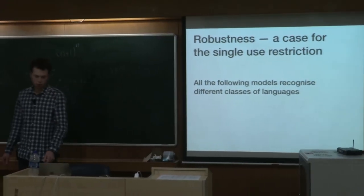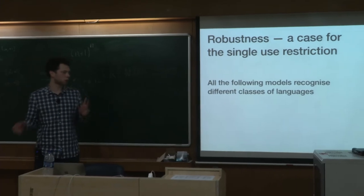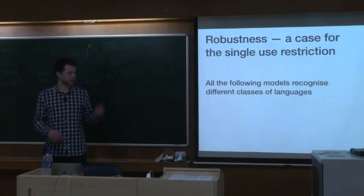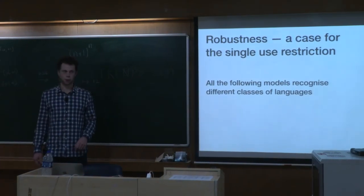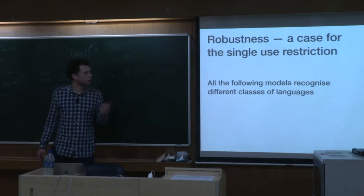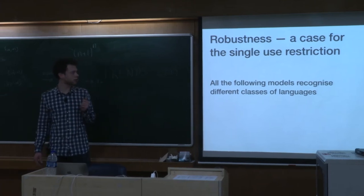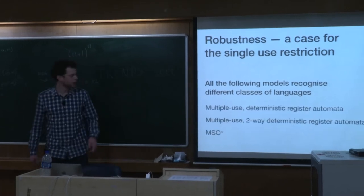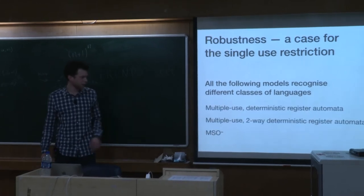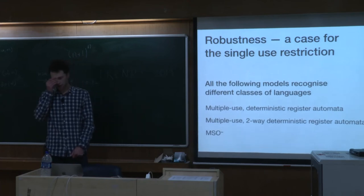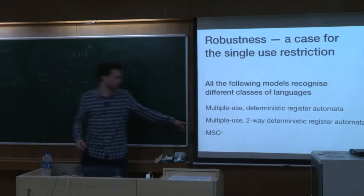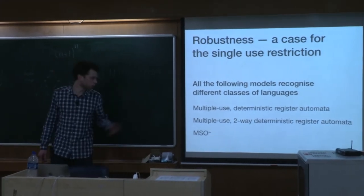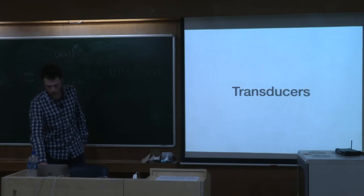We would like to point out that in this world of languages with infinite alphabets, this class of languages seems to be very robust because it admits multiple equivalent characterizations. It is remarkable — it is not very common for a class of languages to be robust. For example, if we take away the single-use restriction or the rigidly guarded restriction for MSO with data comparison, all those classes of languages will recognize different things, yielding different classes of languages.